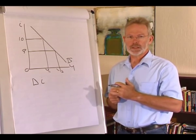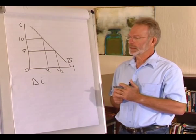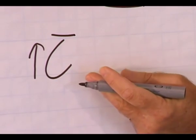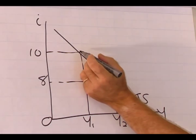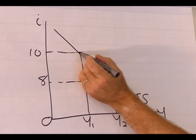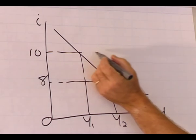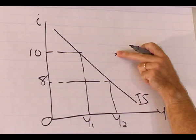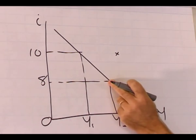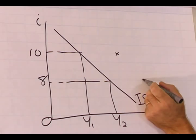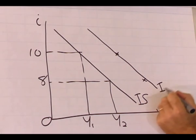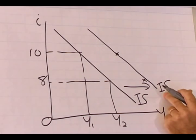Let's start with a change in autonomous consumption spending — let's increase it. Starting at the interest rate of 10%, an increase in autonomous consumption spending means demand for goods and services will increase at the given interest rate. At the interest rate of 8%, demand for goods and services will also increase, shifting to the right. If we link these points, we see the IS curve has shifted to the right.